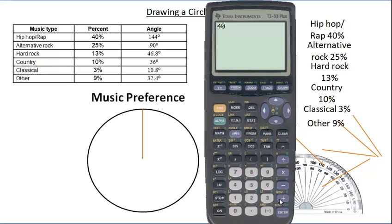If we add all of these up - 40 and 25, 13, 10, 3, and 9 - you should get 100. Now if you get 99 it might be just a rounding error, but you shouldn't be getting a lot less than 100 or a lot more than 100. If you do, then they're not actually percents.